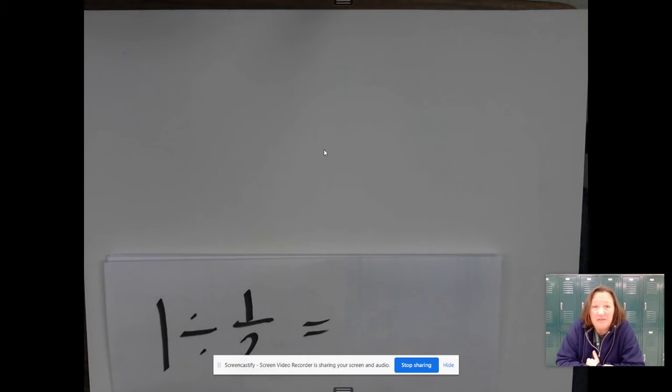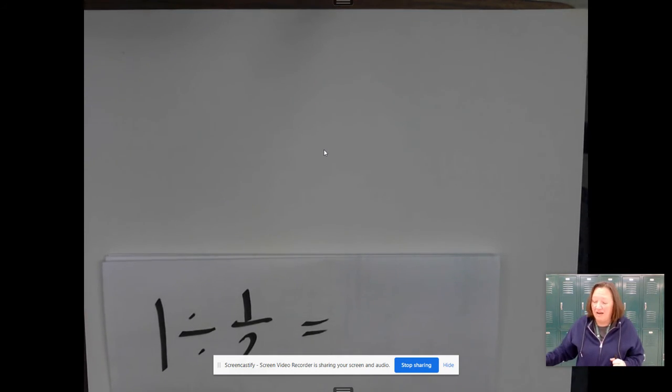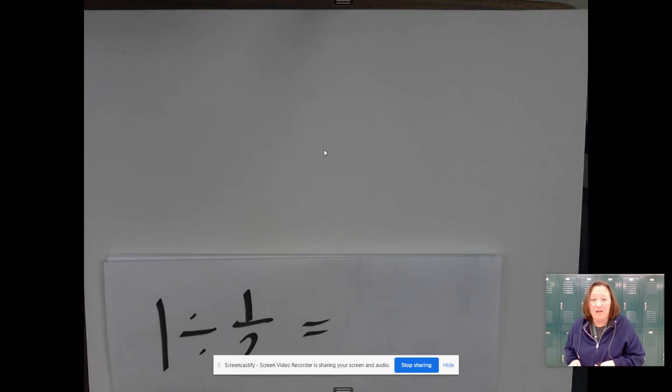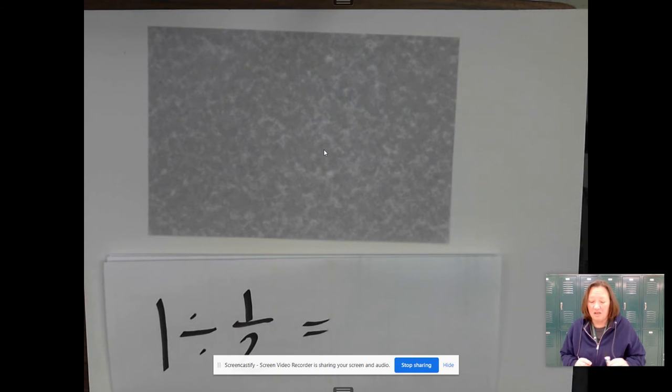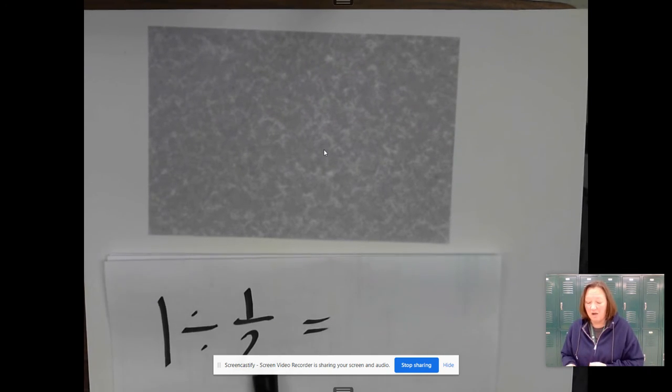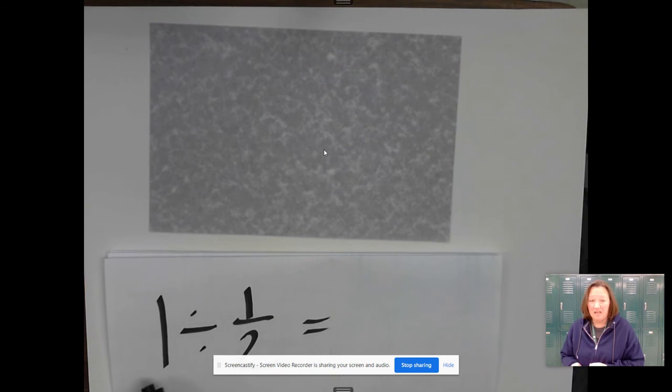Later on we'll talk about taking a unit fraction and dividing it by a whole number, but today we have whole numbers and we're dividing by unit fractions. So I have 1 divided by 1/2 written as our problem, and here is my one whole. This is asking me how many groups of one-half are there in the number one.